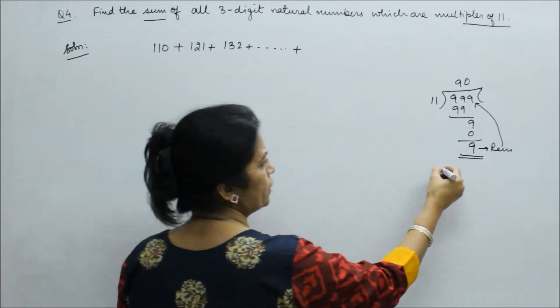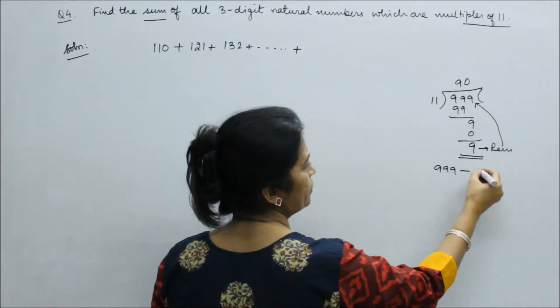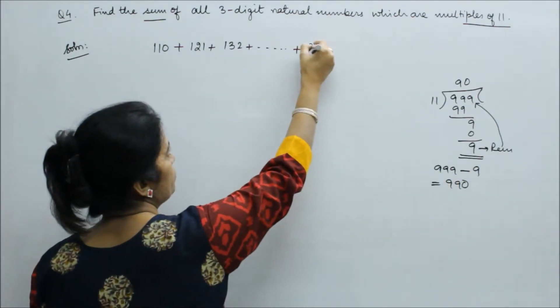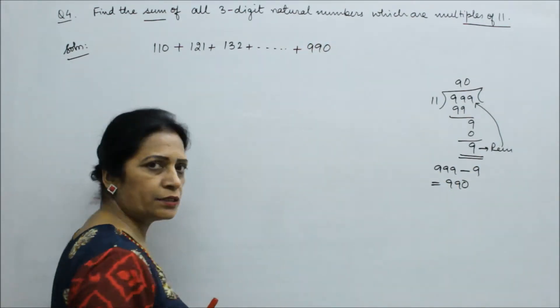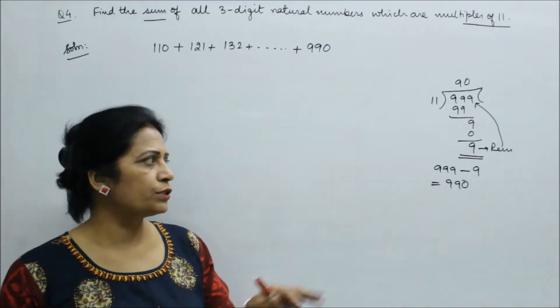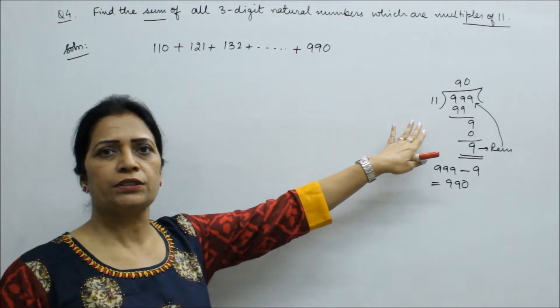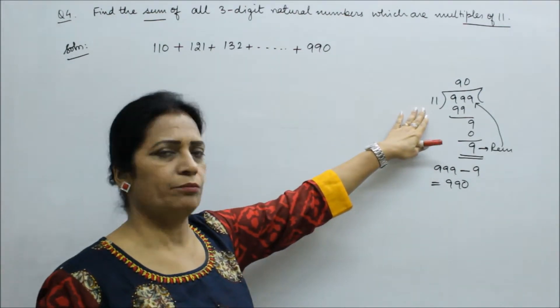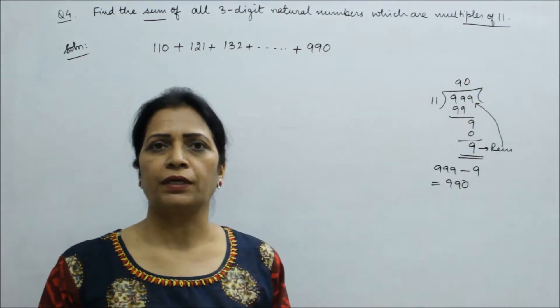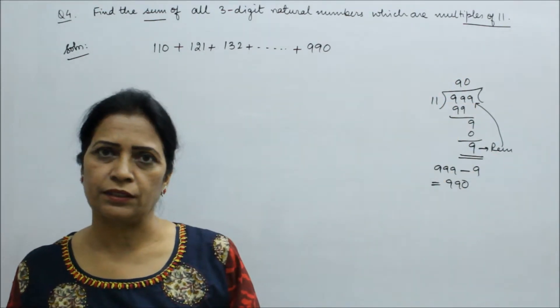From 999 we subtract the remainder, we minus 9 to get 990. So last number is 990. Because we divide each number, the last 3-digit number which is a multiple, divisible with no remainder. Then we subtract to get it.